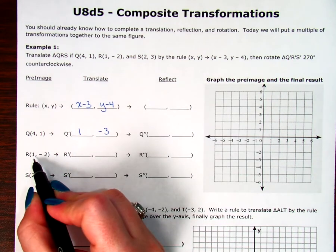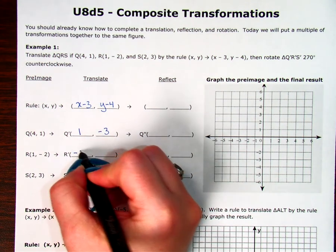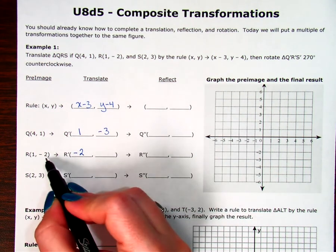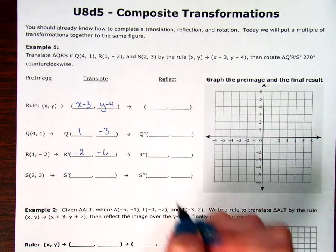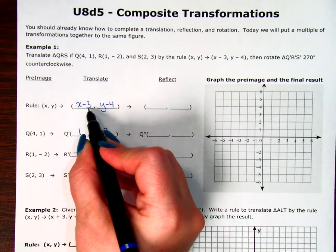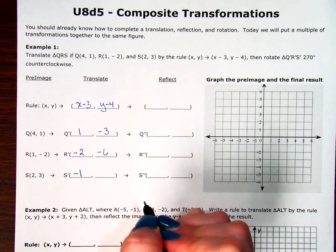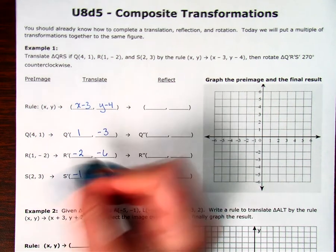Then, I'm going to move to R to find R prime. 1 minus 3 is negative 2. Negative 2 minus 4 is negative 6. 2 is my x value, x minus 3. 2 minus 3 is negative 1. 3 minus 4, that's also negative 1.